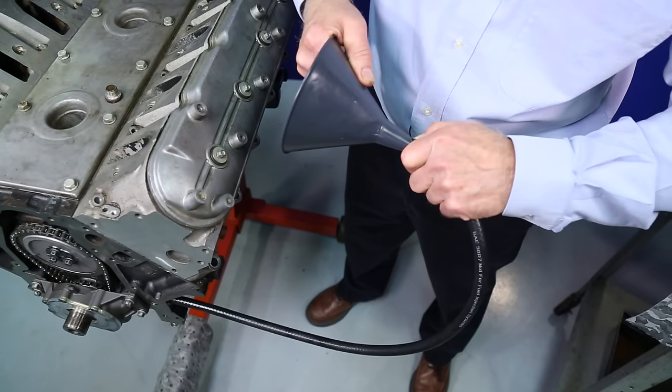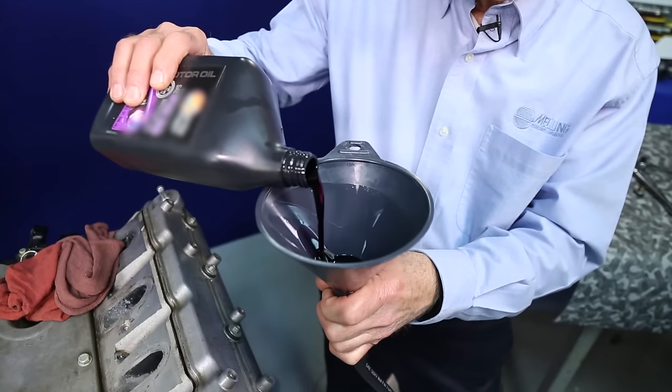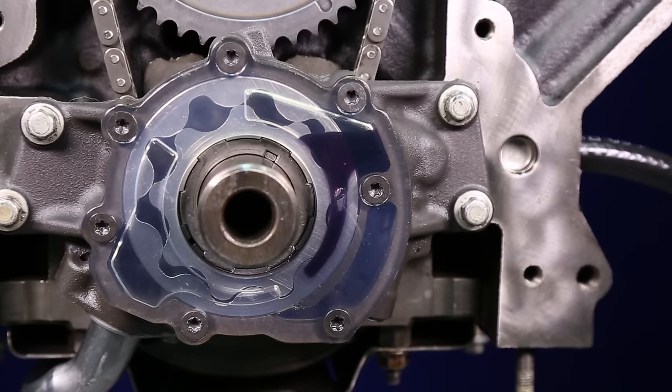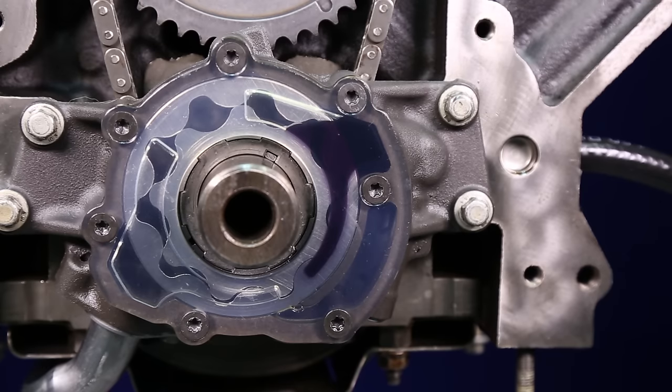Place a funnel over the hose and pour 8 ounces of your engine oil slowly into the funnel. As you can see, I've installed a clear cover on the pump for demonstration purposes so you can see the oil in the pump.